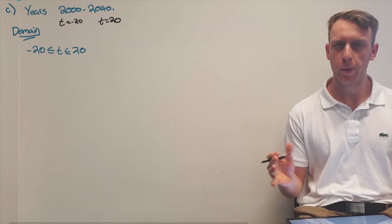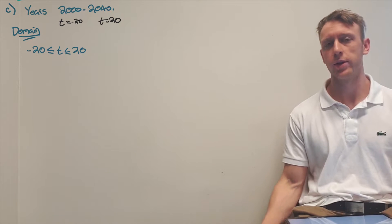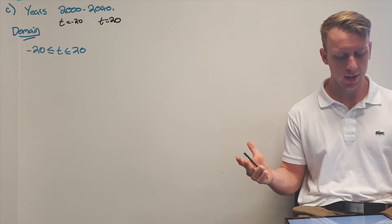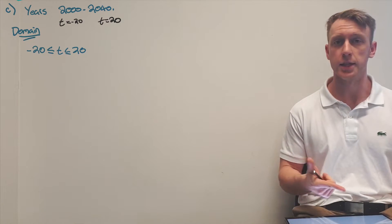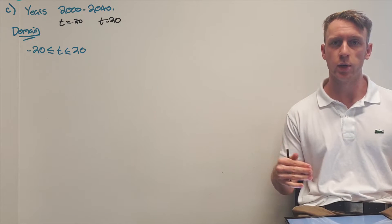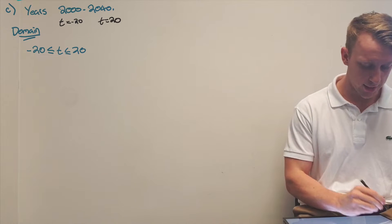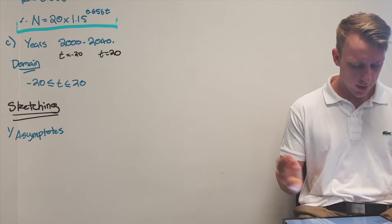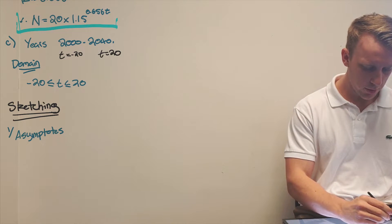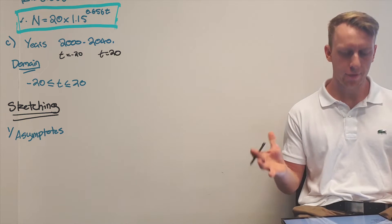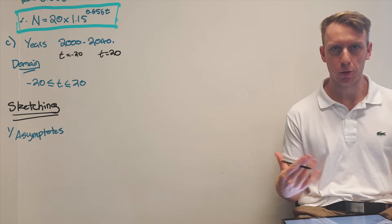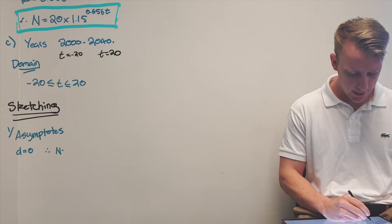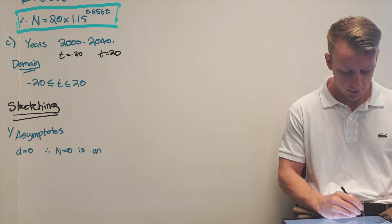Since we're sketching an exponential function, we use a five-step process: asymptotes, intercepts, shape, second point if needed, then sketch. Starting with asymptotes: our model has no constant added, so d equals 0, therefore n equals 0 is the asymptote.